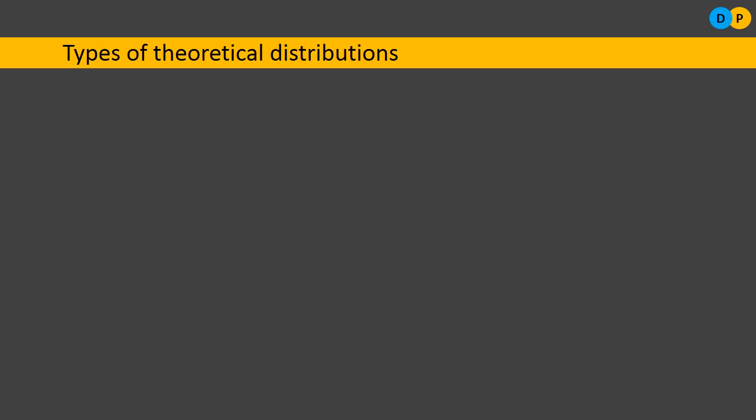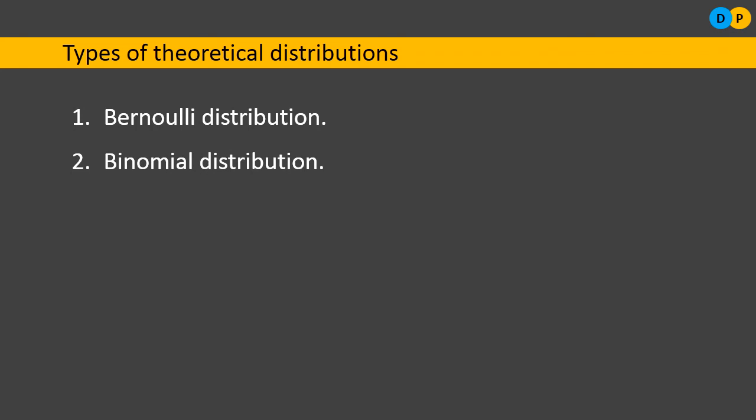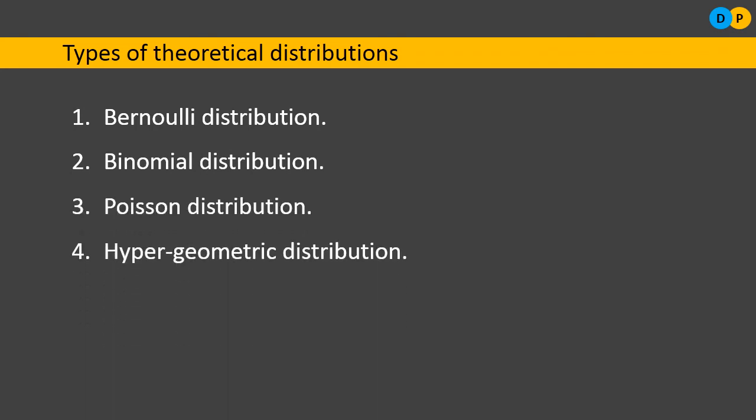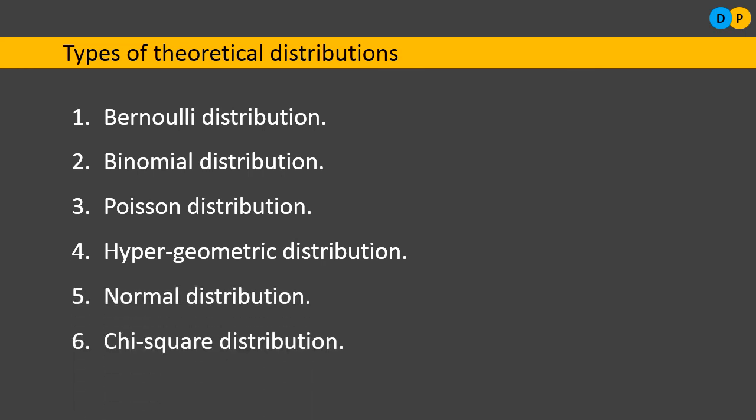There are seven types of theoretical distributions for our study: Bernoulli distribution, binomial distribution, Poisson distribution, hypergeometric distribution, normal distribution, chi-square distribution, and Student's t-distribution. The first four — Bernoulli, binomial, Poisson, and hypergeometric — are discrete probability distributions, as the random variable x considers a single value. The last three — normal, chi-square, and t-distribution — are continuous probability distributions, as x considers a range of values. In coming videos we will study each in detail.